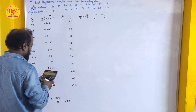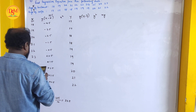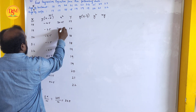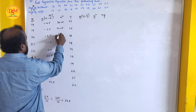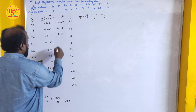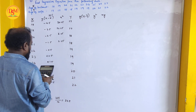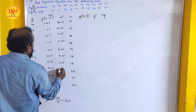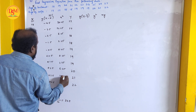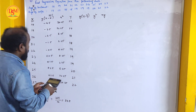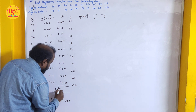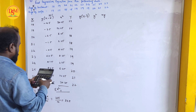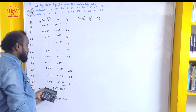Now squaring each small x value: (−4.5)²=20.25, (−3.5)²=12.25, (−2.5)²=6.25, (−1.5)²=2.25, (−0.5)²=0.25, (+0.5)²=0.25, (+1.5)²=2.25, (+2.5)²=6.25, (+3.5)²=12.25, (+4.5)²=20.25. Total sigma x² = 82.5.